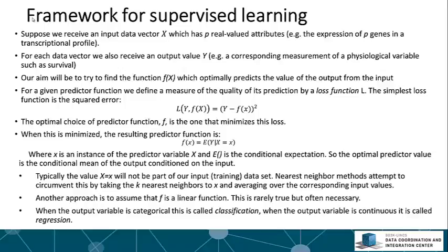Then let's say for each of these data vectors we also receive some output value, y. This might be a measurement of a physiological parameter such as survival, for example.